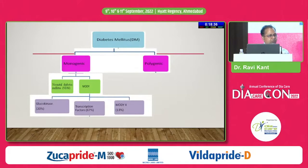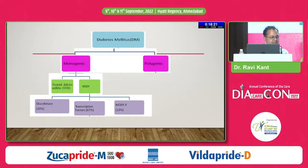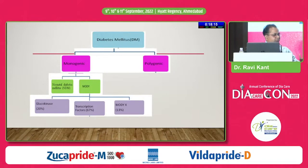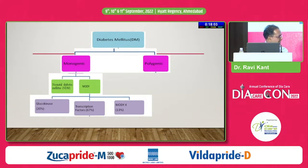What about maturity onset of diabetes in young and how to address this issue? The moment you have a suspicion of monogenic diabetes, 20% is accounted for by glucokinase abnormalities and the rest 68% by transcription factor abnormalities. There are many more modes being discovered — over the last approximately 15 years we have moved from MODY-6 to MODY-13 and many more have been added. That is why this is now called MODY-X. We are exploring more and more genetic and transcription defects.